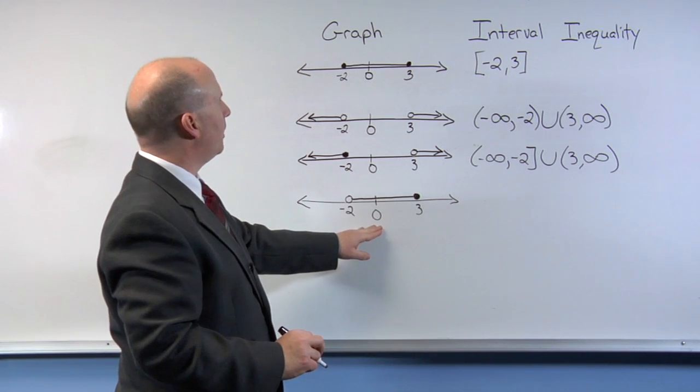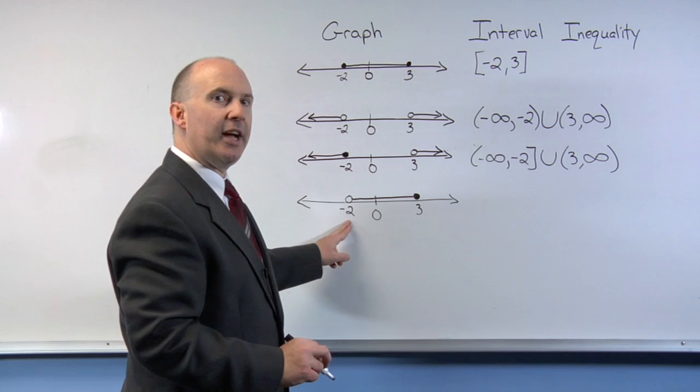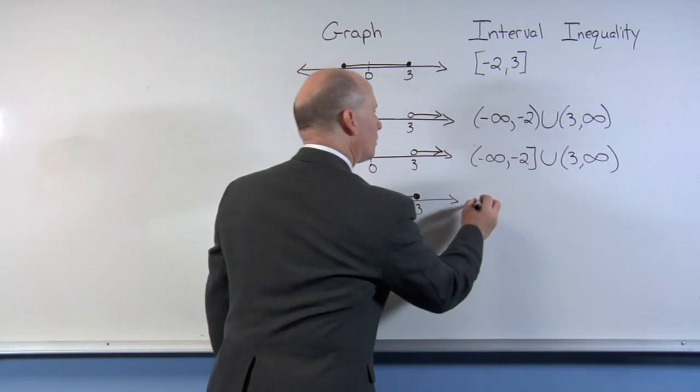And the last example is similar to our first example, except the negative 2 is not included. We'll use a parenthesis instead of the square bracket.